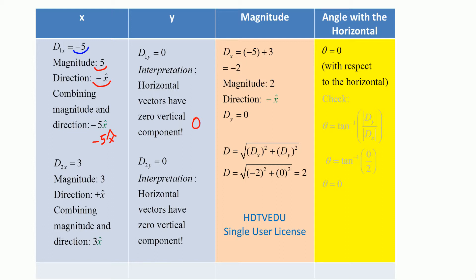Let's take d2. Its horizontal component is positive 3. The magnitude is 3 and the direction is positive x. Combining magnitude and direction, we get 3 x-hat. The vertical component of d2 is also 0, since it is a horizontal vector.